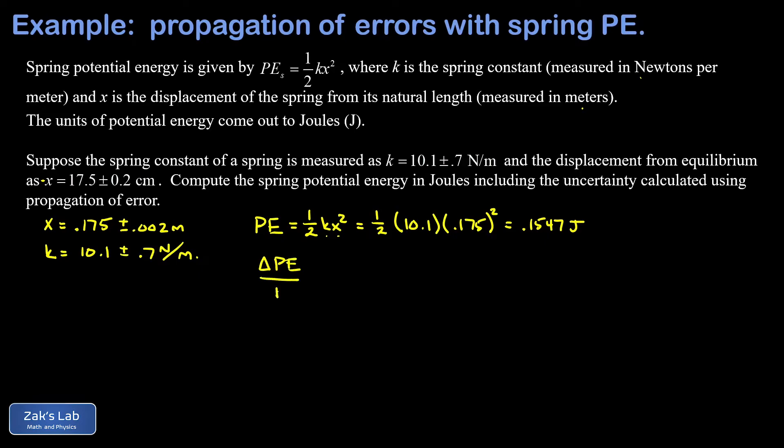Quoting the propagation of errors formula: the relative uncertainty in potential energy (delta PE over PE) equals the square root of (delta k over k) squared, plus 2 times (delta x over x) squared. The two is there because the exponent on x in the potential energy formula was two.